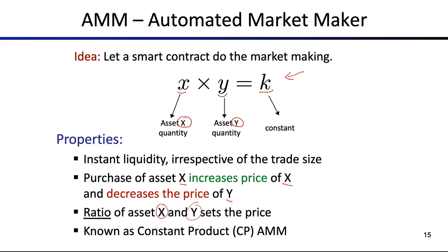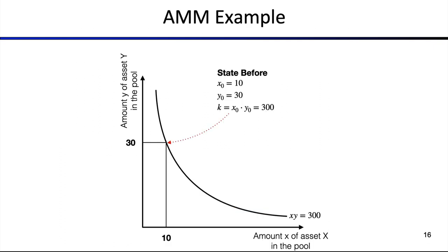Some people refer to this as a constant product AMM. There are also more sophisticated formulas where you can have multiple assets — more than two — in the market, and you can have different parameters to configure the automated market maker curve. Let's look into the bonding curve to understand how this actually works.